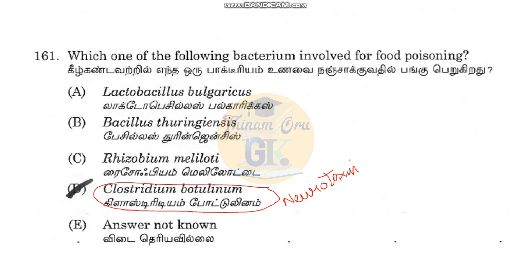Looking at the options: Lactobacillus is used in dairy industries. Bacillus thuringiensis is used as an insecticide. Rhizobium meliloti is involved in nitrogen fixation. The food-poisoning bacteria among these is Clostridium botulinum.